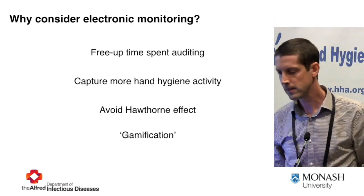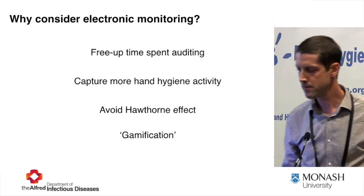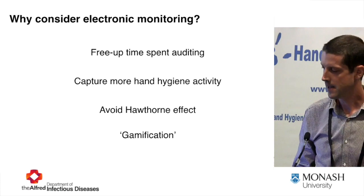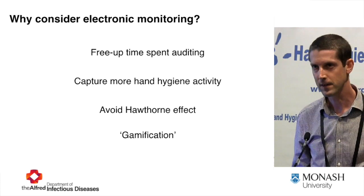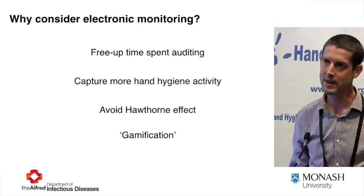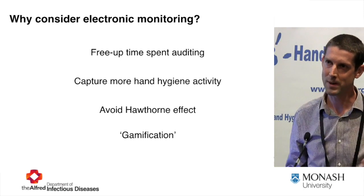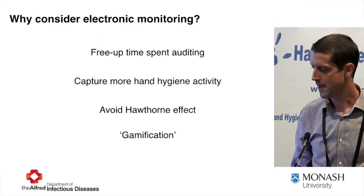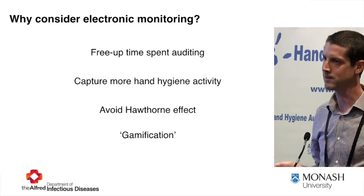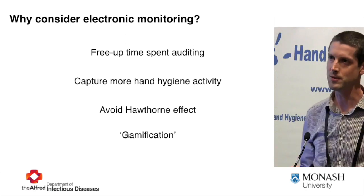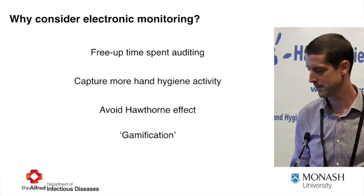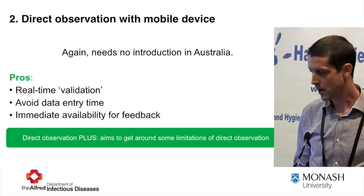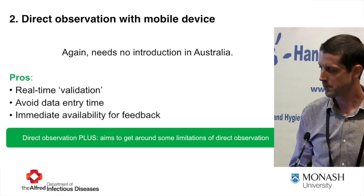There's also the potential for bias — the Hawthorne effect and observer bias. So why do we consider electronic monitoring? Maybe we can free up some time for other things, capture more hand hygiene activity, and potentially avoid the Hawthorne effect — although some might argue that the Hawthorne effect is actually part of why we do direct observation and part of behavior change. And there's the concept of gamification, which might be an intervention itself.